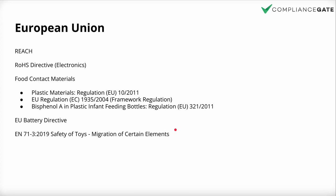Finally, there's something quite interesting: EN71-3 2019, which is a standard rather than a regulation — 'Safety of Toys: Migration of Certain Elements.' It primarily covers a set of heavy metals and also phthalates. As noted, there is overlap between regulations, but there can be differences in test methods and in the exact limits. The reason I listed this standard is to make clear that substances are not restricted exclusively under regulations but also under standards in some cases.